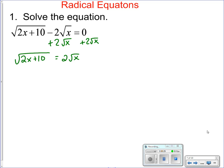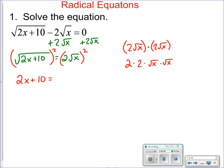When I square the left side, squaring undoes a square root, so I'm just left with 2x + 10. On the right side, I have 2√x times 2√x, which is really 2 times 2 times √x times √x by the commutative property of multiplication.